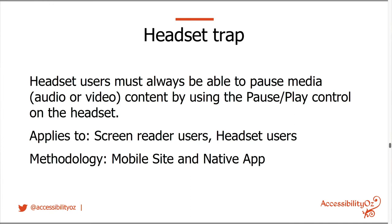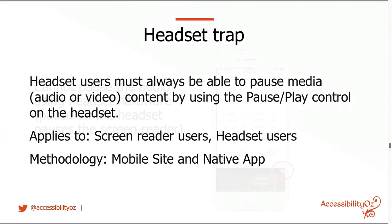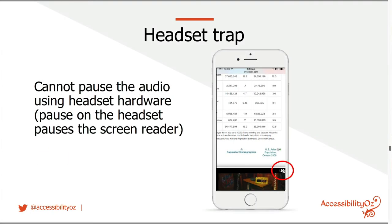The headset trap: headset users must always be able to pause media, audio or video content by using the pause/play control on the headset. For example, on a web page with a pop-up video that has audio — there's a touch ability to stop the audio, but if you're using a headset without touch ability, that headset button pauses the screen reader, not the audio.